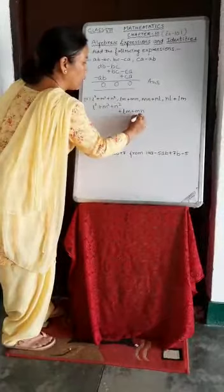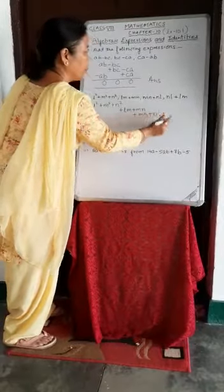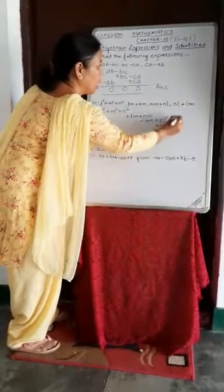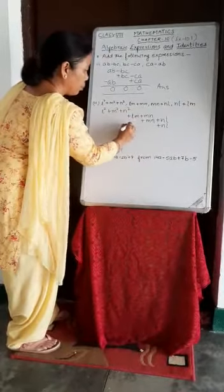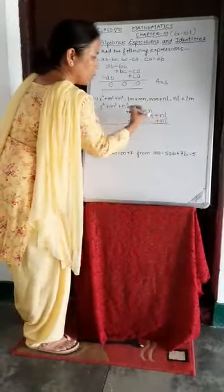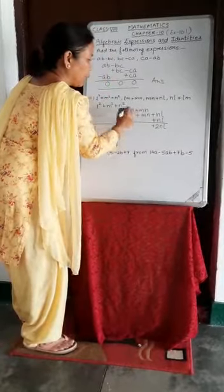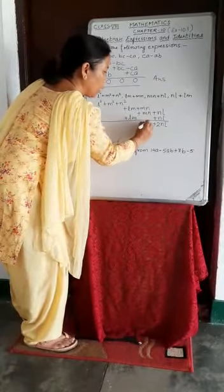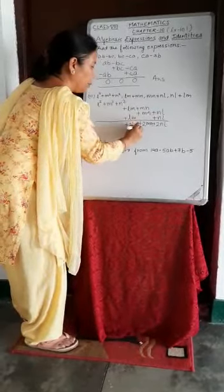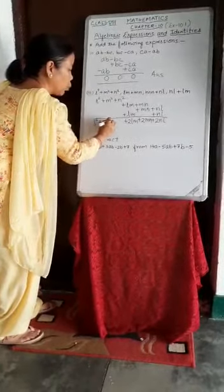MN will come below MN. This NL term is not yet placed, so it will be written separately. The last expression has NL terms, which will be written below the existing NL column, and LN will be written below LN. Draw a line and add. Plus plus is plus, so NL plus NL is twice NL. Similarly, MN plus MN is twice MN, and LN plus LN is twice LN. These three terms come as they are.